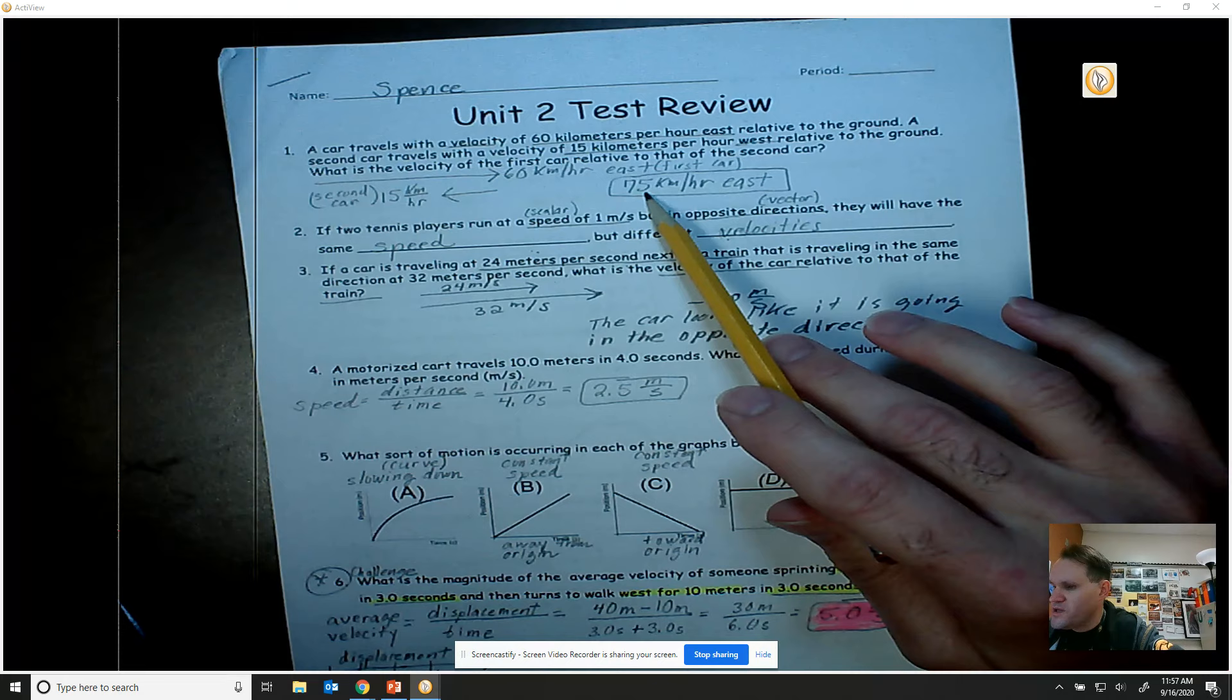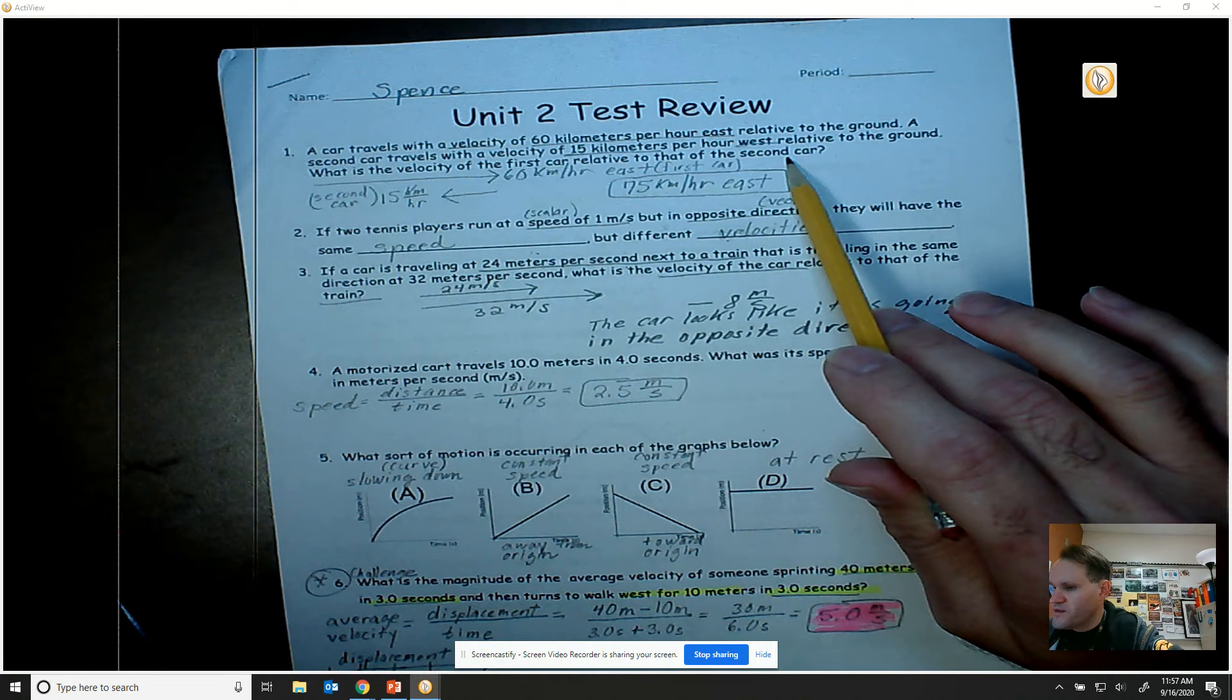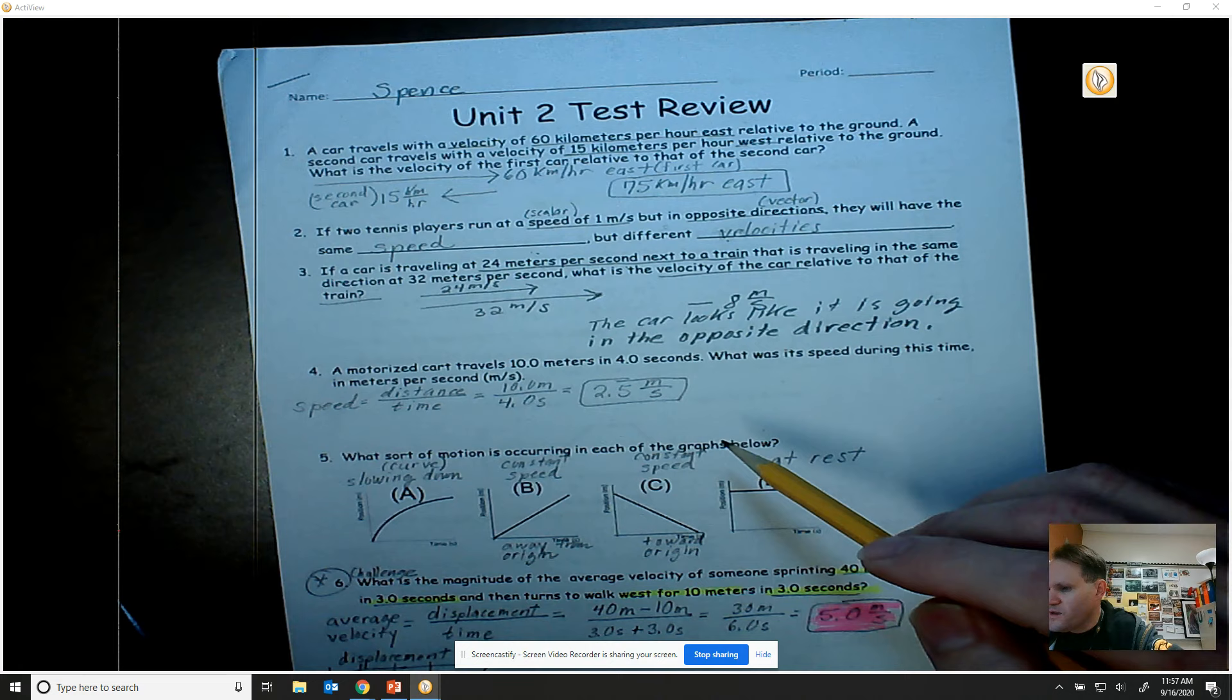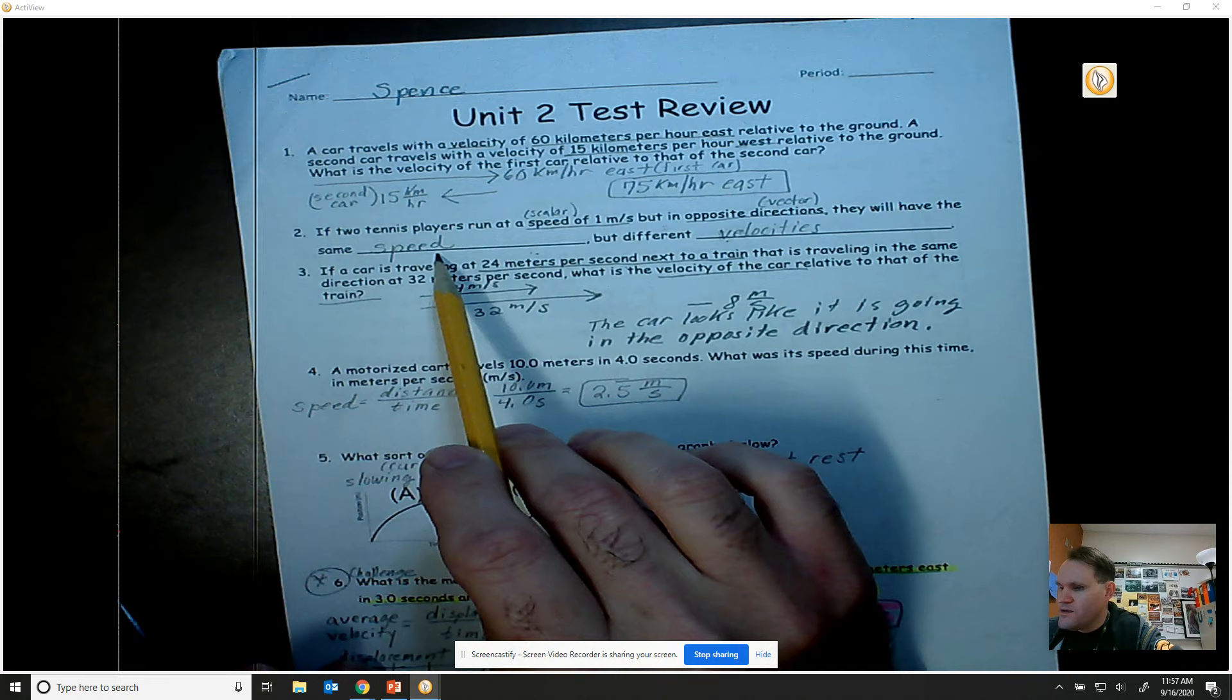Remember you're looking at it from the perspective of the second car. For problem number two, it says if two tennis players run at a speed of one meter per second but in opposite directions, they will have the same speed but different velocities.